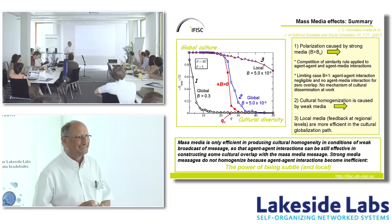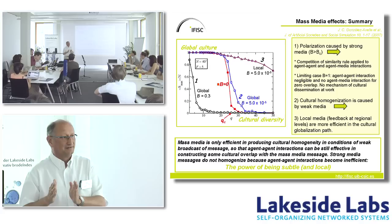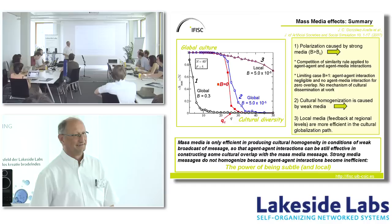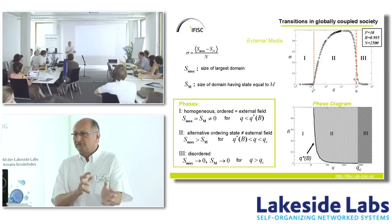If parties know this, why do they send strong messages? They send strong messages between elections — when they approach elections, the message becomes much weaker. They want to hold their base when there are no elections, and when elections approach, they want to attract the others. This is a good example of how self-organization can compete with external driving.